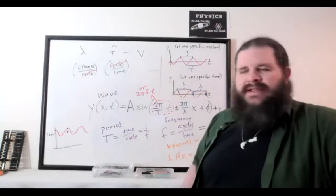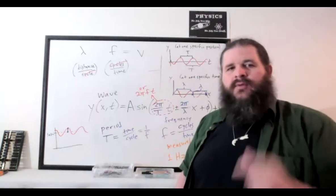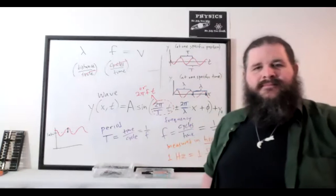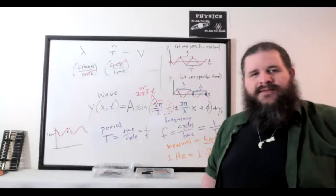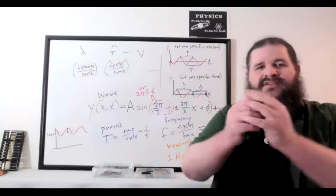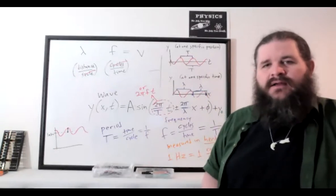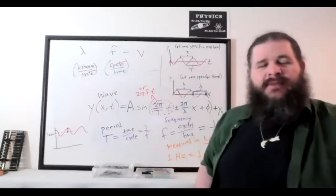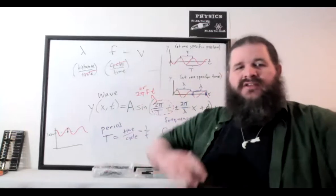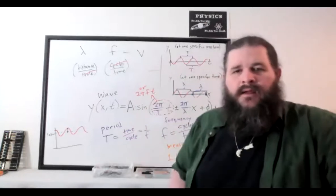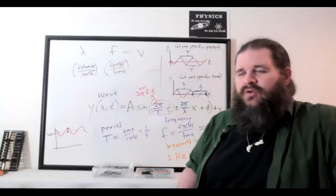Can you choose how fast a wave travels? No — the speed depends on the properties of the medium. For a sound wave, the speed depends on the density and temperature of the air. For a wave in a string, it depends on the tension and density of the string. The source cannot choose the wave speed unless it can modify the medium itself. However, what the source can choose is the frequency — how many times per second the wave oscillates.